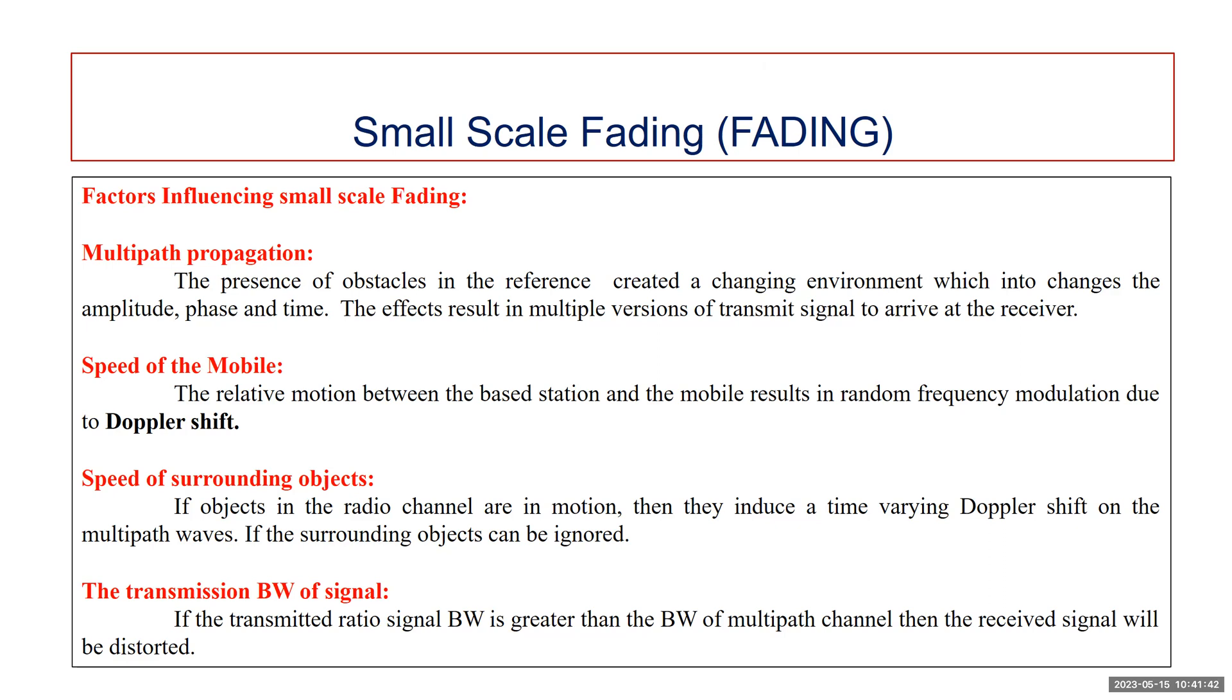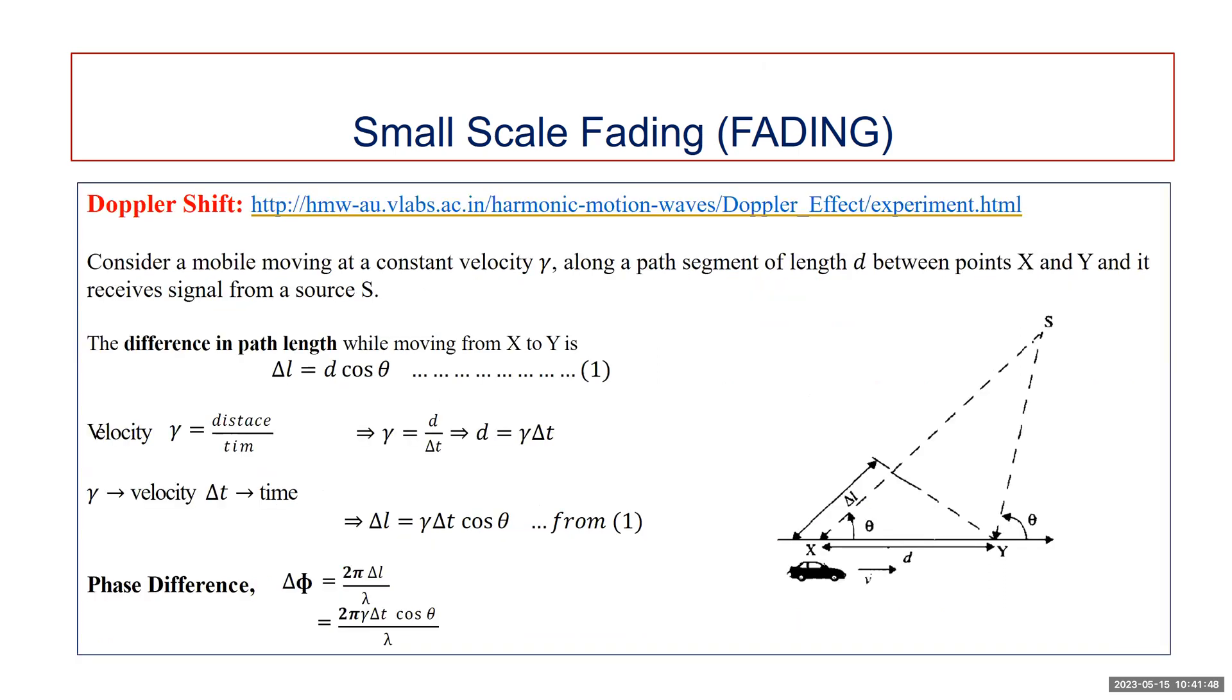These are the various effects leading to small scale fading. The major thing is that the Doppler shift should be considered. So let's discuss what is Doppler shift. The Doppler shift is the shift in transmitter signal frequency or received signal frequency due to movement. Consider a mobile moving at velocity V along a path segment having length D between points X and Y. The mobile receives signals from a remote source S.